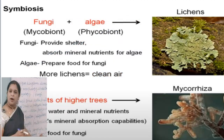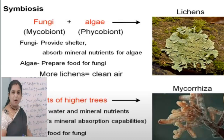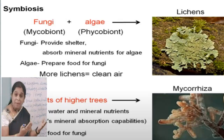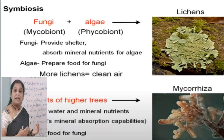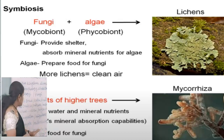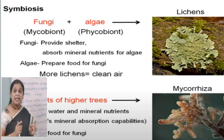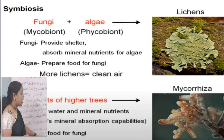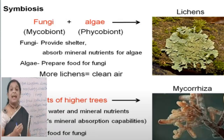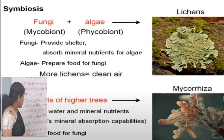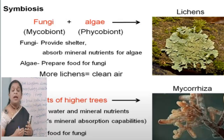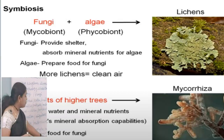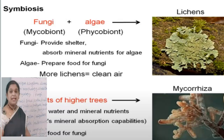Saprophytes get food by decomposing dead organic substances. Parasites depend on plants and animals and may be partial or complete parasites. In symbiotic mode of nutrition, there is mutual benefit for both organisms. An example of symbiosis in fungi is seen in lichens, which consist of both an algal and a fungal component. Some fungi also take shelter in the roots of higher plants, which is called mycorrhiza.